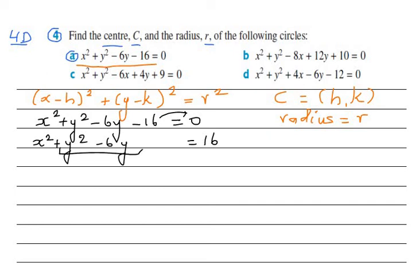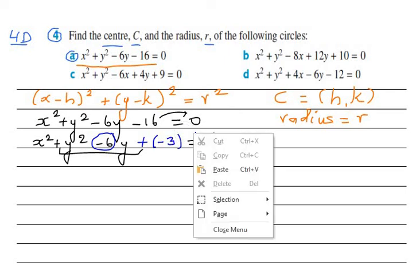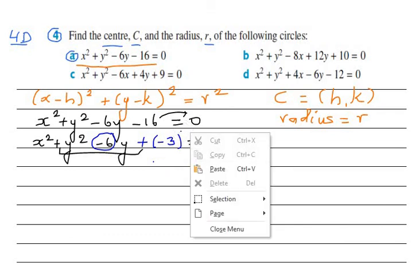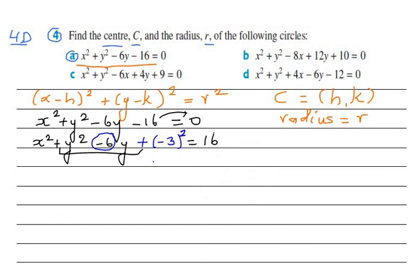Now I have to use the completing the square method to make it a perfect square. You take half of the coefficient of y: half of negative 6 is negative 3, and then square it — negative 3 squared equals 9. I've added 9 on the left side, so I add 9 on the right side as well.